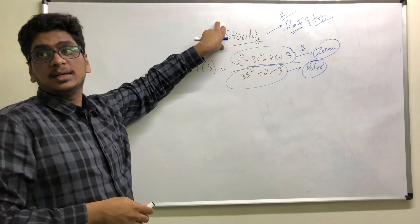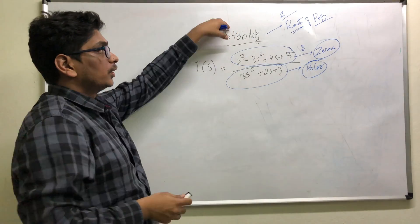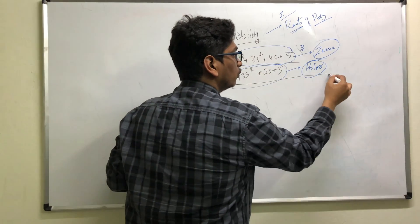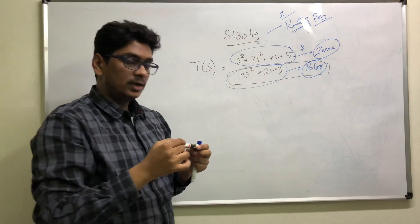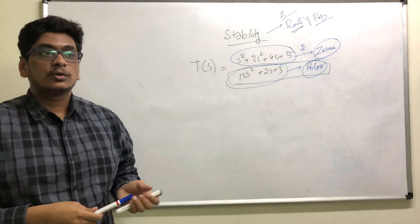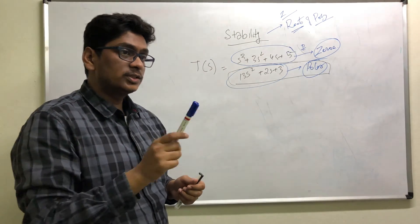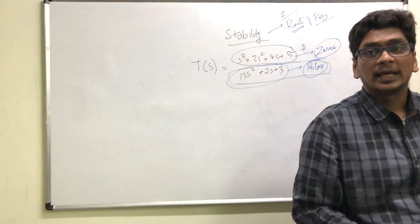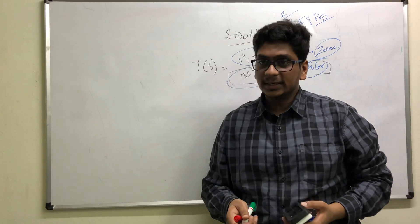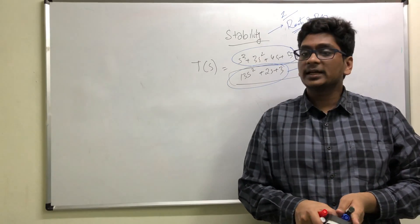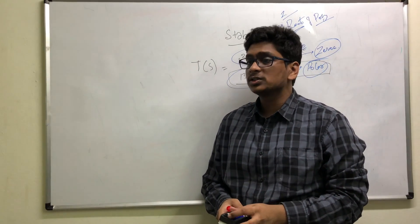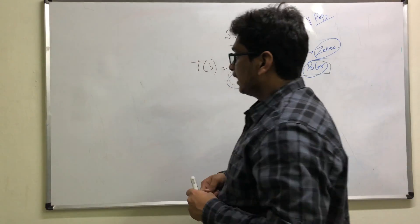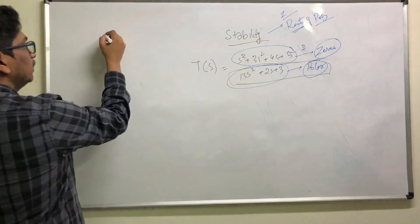For stability, you're not really worried about the zeros, but you want to know about the poles of the transfer function. Depending on these poles, depending on where these poles lie in an s-plane, you can actually decide if the system is stable or unstable or if it is marginally stable. Any system can be three things.